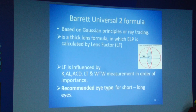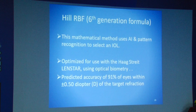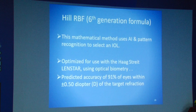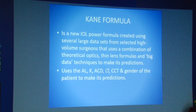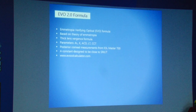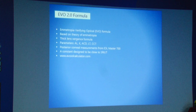Barrett Universal 2 is recommended for both short and long eyes. It uses keratometry, axial length, anterior chamber depth, lens thickness, and white-to-white measurements in that order of importance. It uses artificial intelligence and gives predicted accuracy of 91% of eyes within 0.5 diopters. Olsen uses ray tracing. The Ladas super formula intelligently combines the best-performing portions of multiple 3rd and 4th generation IOL formulas. The Kane formula uses axial length, keratometry, anterior chamber depth, lens thickness, CCT, and even gender of the patient. EVO 2.0 is a thick lens version formula using similar parameters and is frequently cited in current literature.